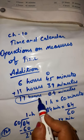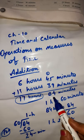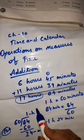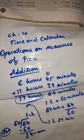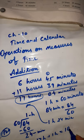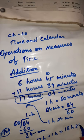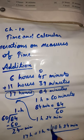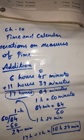Now we have 17 hours and 84 minutes. We will add the converted 1 hour to 17 hours. So 17 hours plus 1 hour equals 18 hours and 24 minutes. Our final answer is 18 hours 24 minutes. This is how we solve addition of time operations.